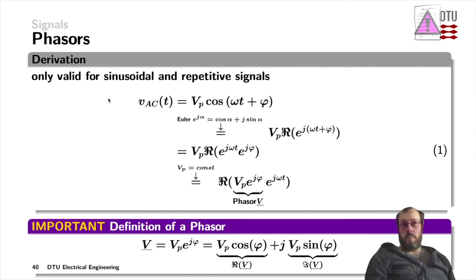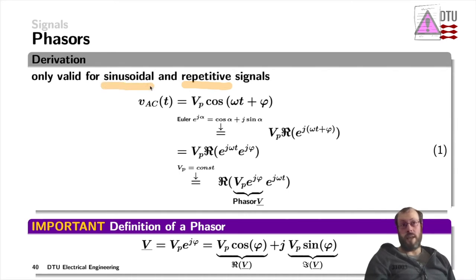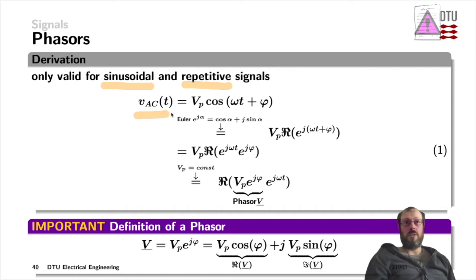The mean value and the RMS value were defined for repetitive signals only. We are now adding another constraint: it has to be sinusoidal. So this is no longer valid for a square wave, triangle wave, sawtooth, and so on. We're still starting out with the time representation — the mathematical representation of an AC signal as a function of time.